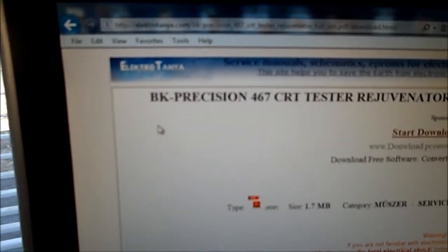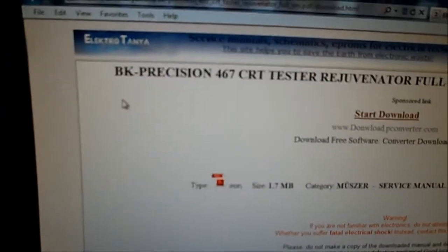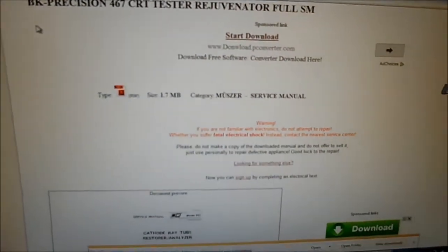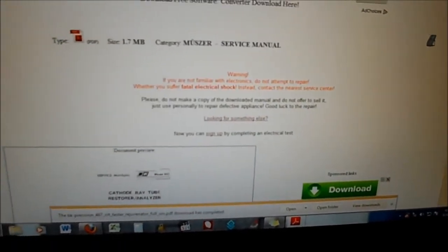I think it's Hungarian or something, but if you go there, E-L-E-K-T-R-O-T-A-N-Y-A dot com, they'll have you take a short test. Don't be fooled by the downloads they try to spoof you with. I downloaded the PDF file for the B&K Precision 467. This site has a lot of useful service information on it.